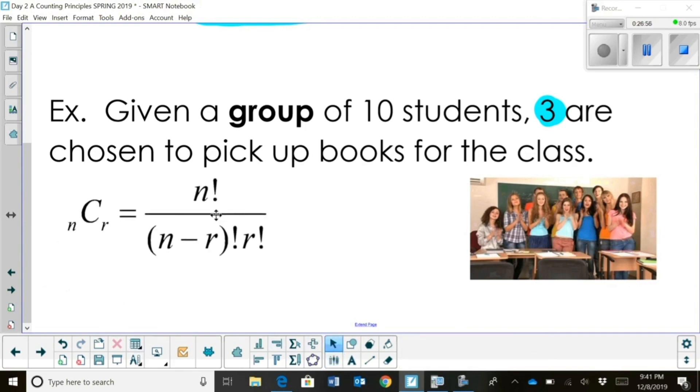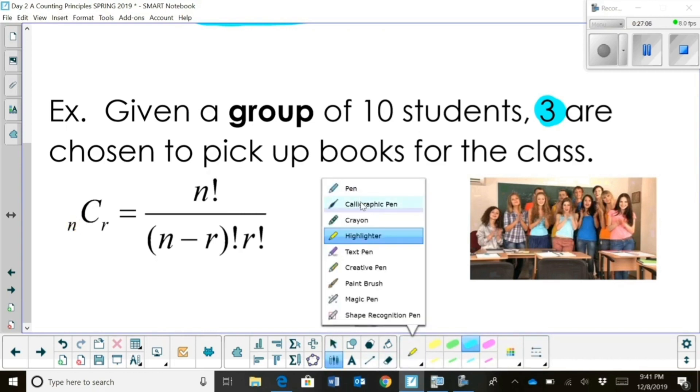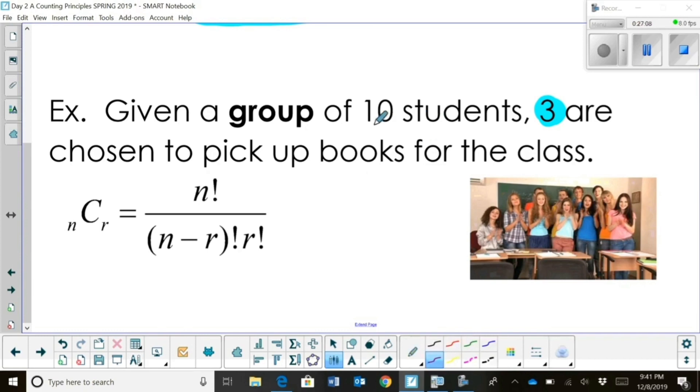We're going to take N choose R, or NCR, where N is the total number of participants. In this case, it's ten students. And then R is how many we're choosing, which in this case is three.